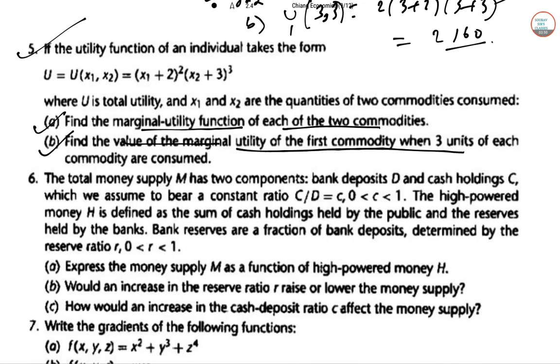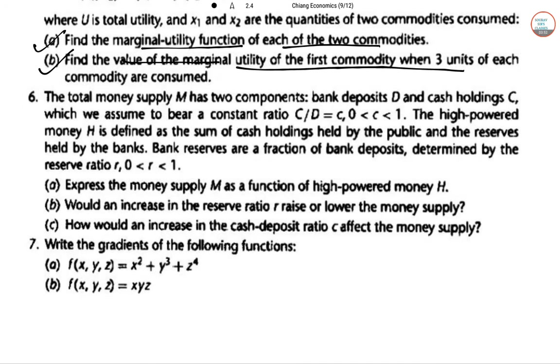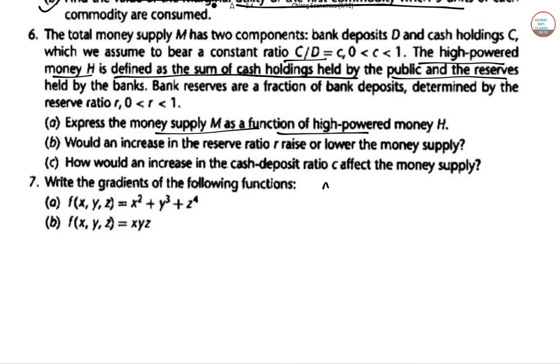Now let's go for question 6. Total money supply M has two components: bank deposits and cash holdings. We have the constant value C plus D of C. The high-powered money H is defined by the sum of the cash holdings held by the public and the reserves. So express the money M in terms of the high-powered money. So M equal to D plus C.